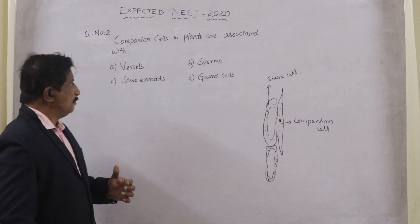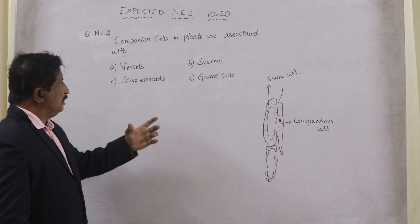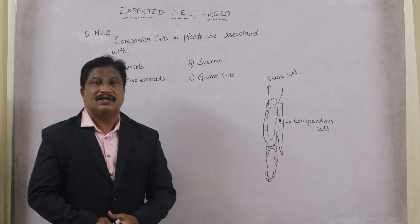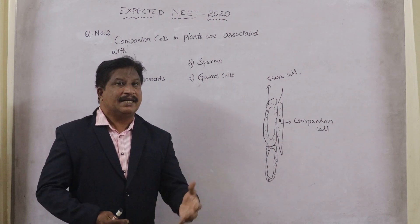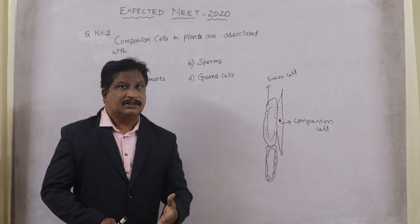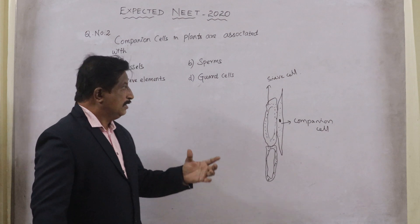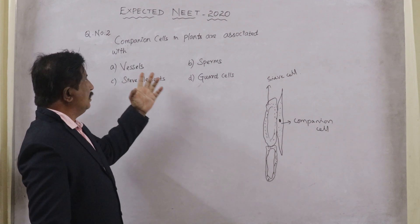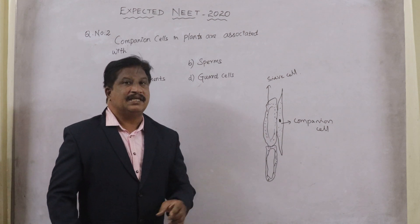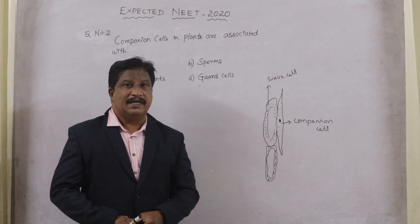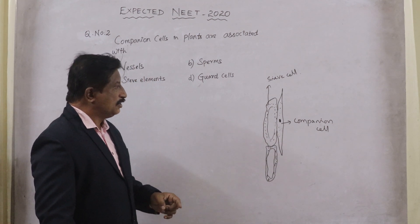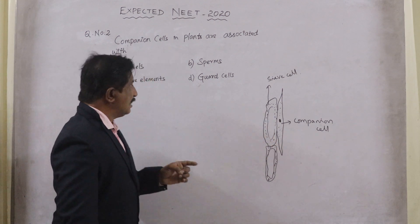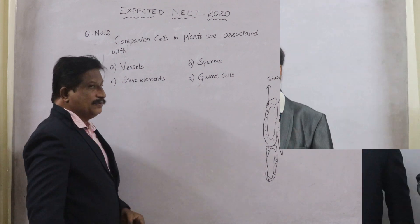We know that companion cells are closely connected to sieve cells in angiosperms. Sieve elements, since they don't have their own nucleus, need to be regulated by an adjacent cell. That is how sieve elements are regulated by companion cells — companion cells have their own nuclei, and with their help, sieve tube cells get regulated.